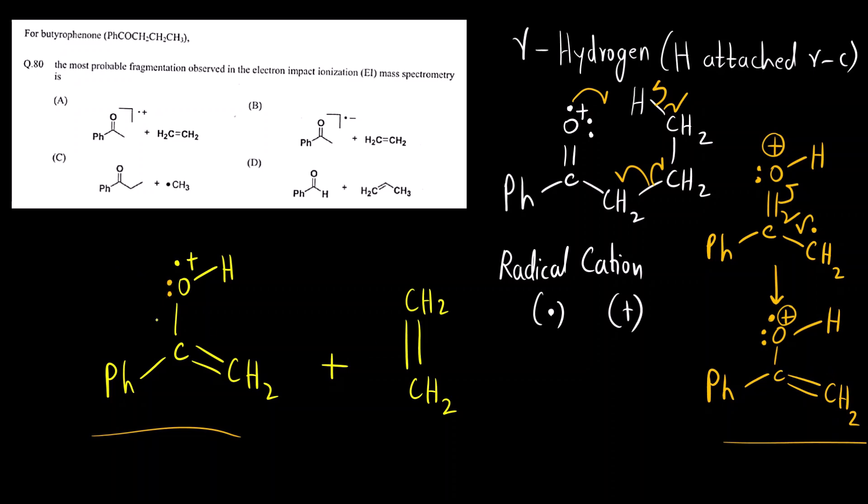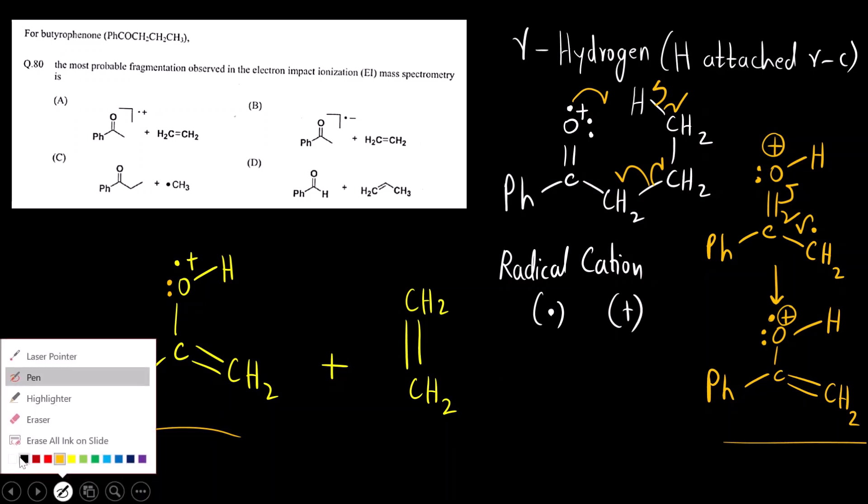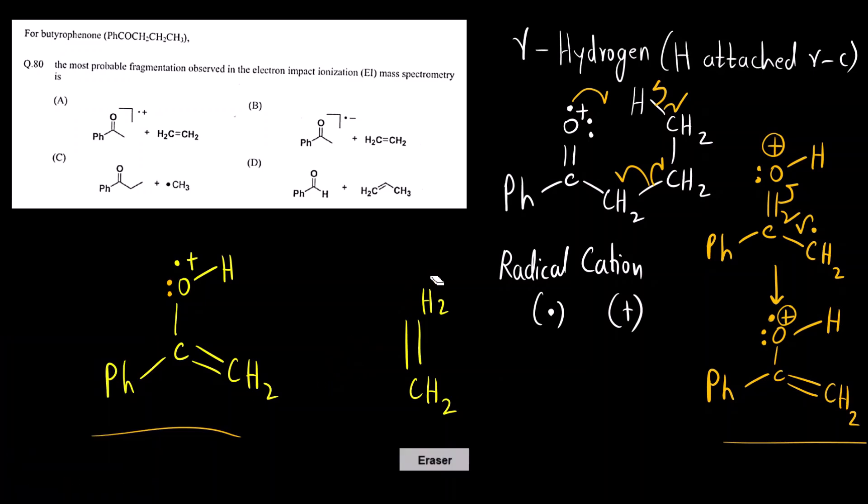Here also there is one lone pair that is present. Now this is enol form. What I can do is I can do tautomerism and we can get keto form. We can do keto-enol tautomerism and we will get the keto form. How do you do keto-enol tautomerism? This pi electrons will pick up this hydrogen and this will come here.